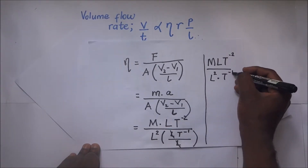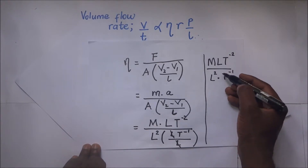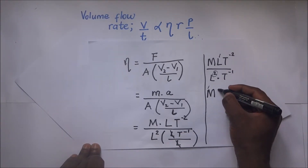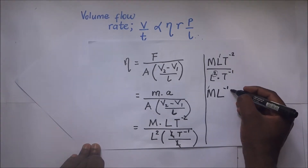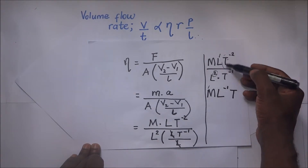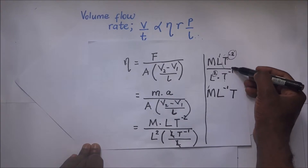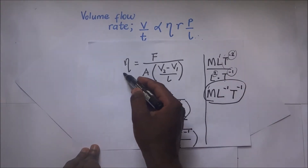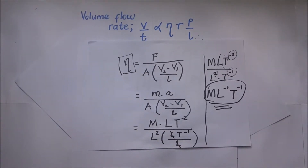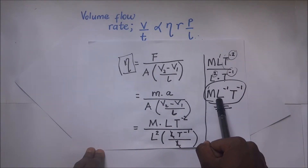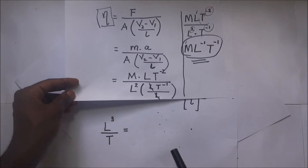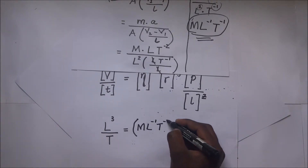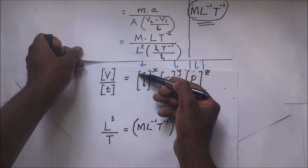Simplifying, the L in the numerator and denominator cancel. We get M·L·T⁻² divided by L², times T⁻¹. Using laws of indices: L gives 1 minus 2 = L⁻¹, and T gives negative 2 minus negative 1 = T⁻¹. So the dimensions of the coefficient of viscosity are M·L⁻¹·T⁻¹, to the power x.